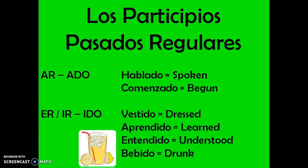Now let's talk about how to form past participles. Past participles are similar to present participles. Present participles end in -ando, -yendo, or -yendo. Past participles are just as simple to form: if it's an AR verb, it ends in -ado; if it's an ER or IR verb, it ends in -ido. Let's look at some examples of AR verbs.